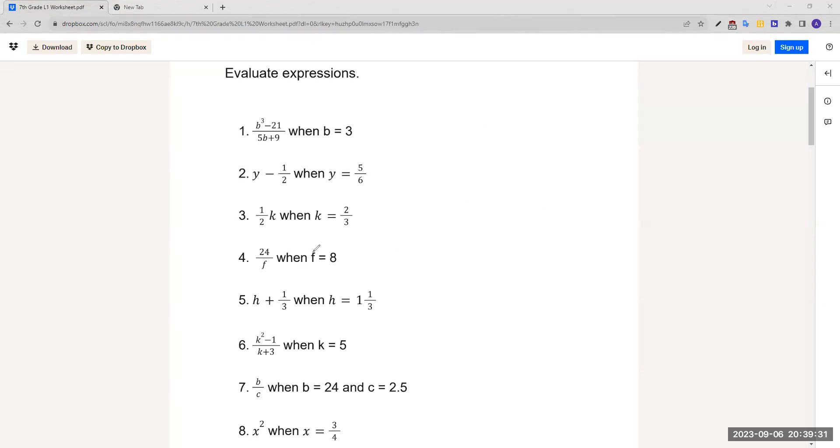For number 4, 24 over f when f equals 8. We plug in 8 for f, which is right here. 24 over 8 is the same as saying 24 divided by 8, which is 3. So our answer would be 3.